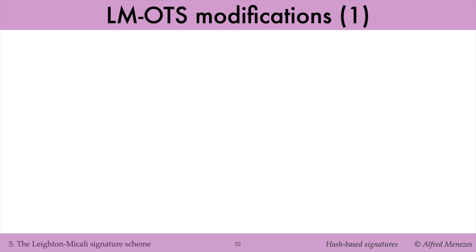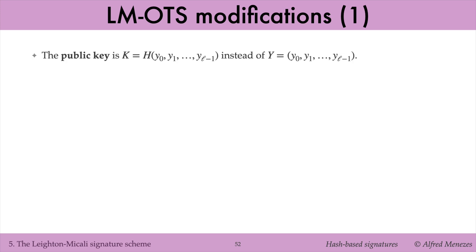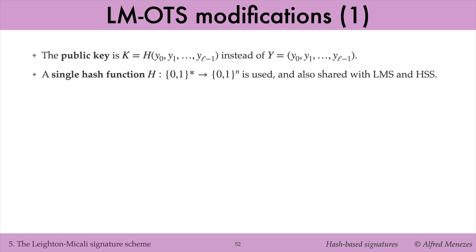Here are the key differences between LMOTS and the Winternitz OTS. First, the public key in LMOTS consists of the hash of the final hash chain values Y0, Y1, up to Y_{L-1}. Since these final hash chain values can be derived from any signed message, the signature verifier can always reconstruct the public key K during signature verification. Second, LMOTS uses a single n-bit hash function H, which is also shared with LMS and HSS.